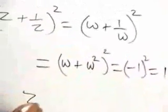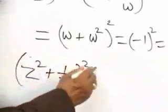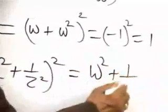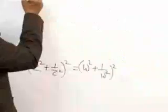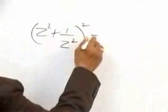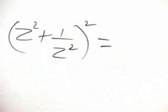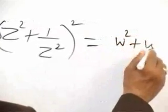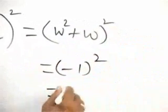In the same way, the second bracket: (Z squared + 1/Z squared) whole squared will be equal to (omega squared + 1/omega squared) whole squared. If we multiply by omega on both sides, the denominator becomes omega cubed which equals 1. Therefore, (omega squared + omega) whole squared equals (minus 1) whole squared, which equals plus 1.